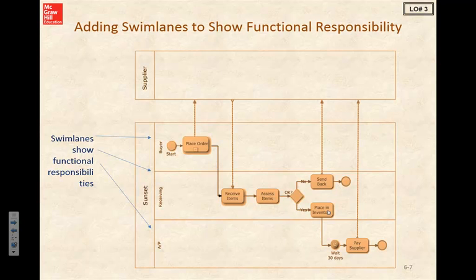If the items are not okay, we're going to branch off, send them back, and then end our process. If they are okay, we'll place them in inventory. Then we've got an intermediary start and stop right here, which means we're going to wait 30 days — just holding off the process to pay our supplier.